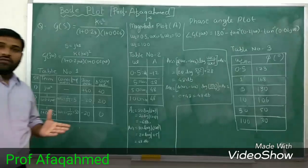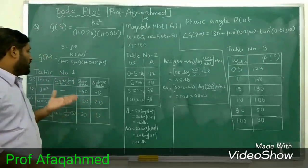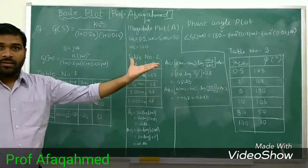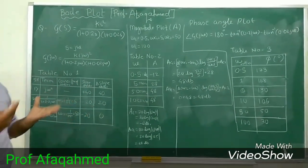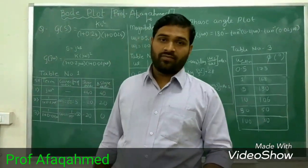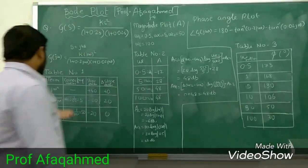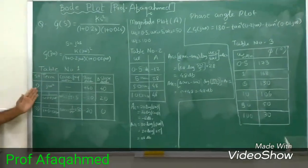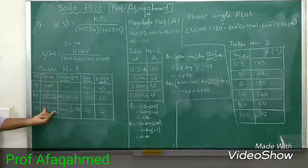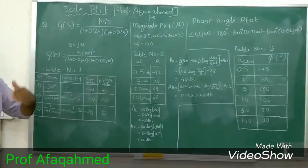Now first we will go for the magnitude plot, and just before the magnitude plot we must prepare Table 1. Several steps are there — if we go step by step it is very easy to find the answer, otherwise it will become the most difficult task to get the final answer. We will make 5 columns: first is serial number, second is term, third is corner frequency, fourth is slope, and fifth is delta slope — that is, change in slope.